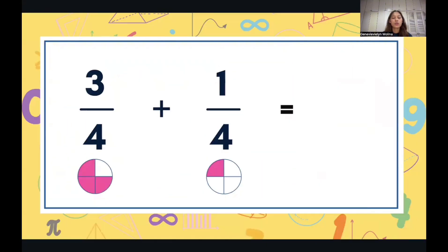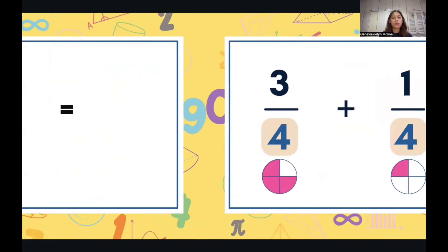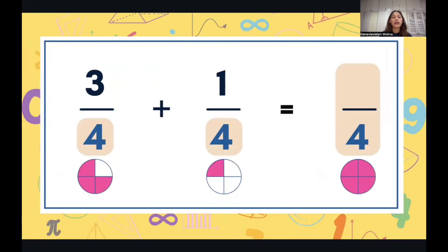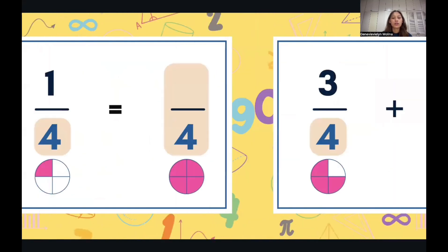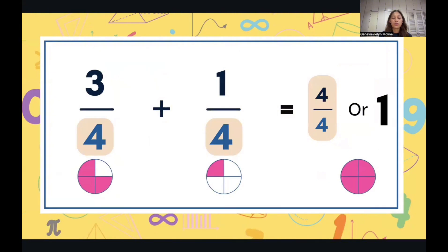Next, 3 fourths plus 1 fourth, copy the denominator, 4, and then add the numerators, 3 plus 1 is 4, so we have 4 fourths or 1.